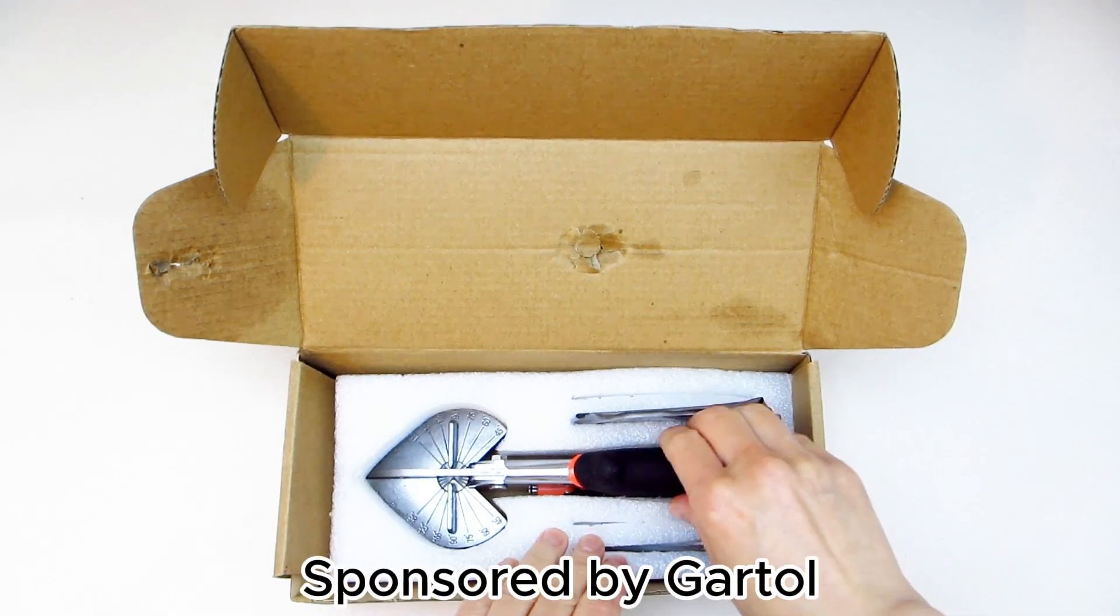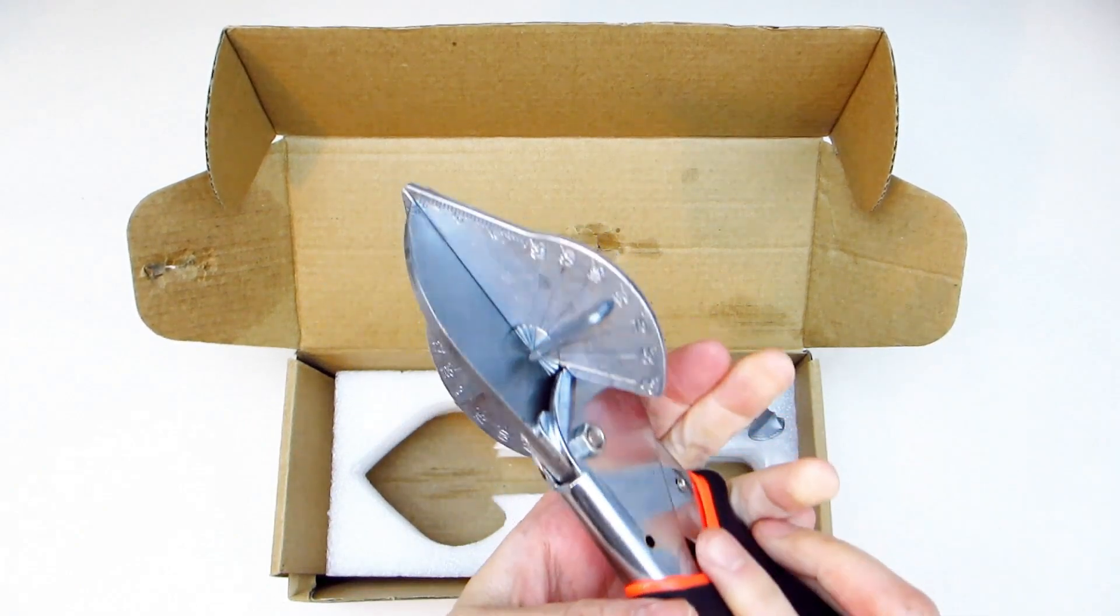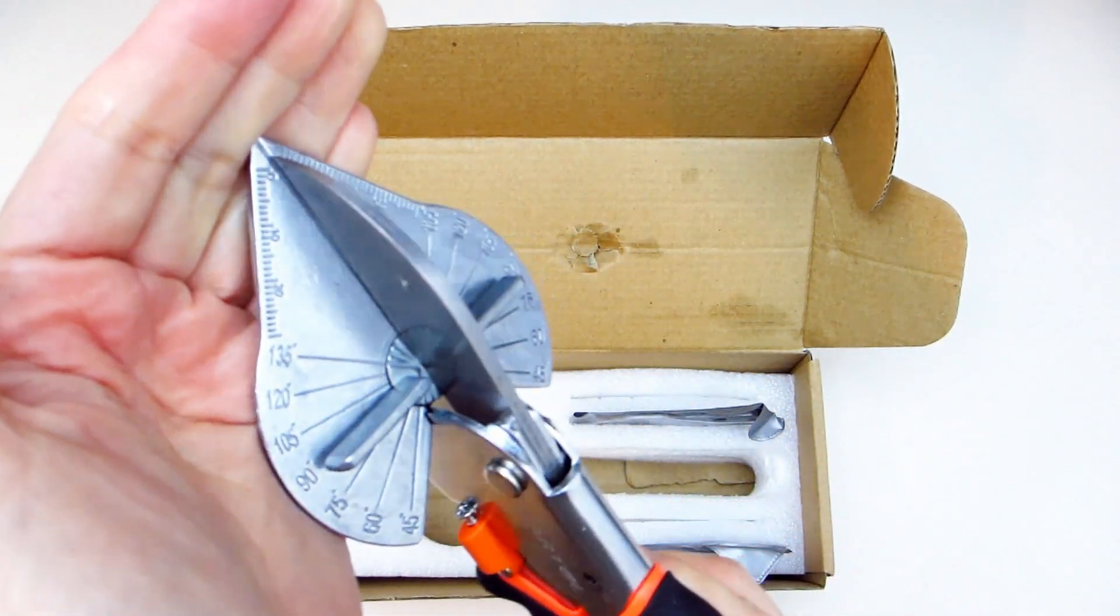The Garton miter shears come packaged in a cardboard box nestled inside a piece of foam. The shears come with no assembly required as the blades are already attached.